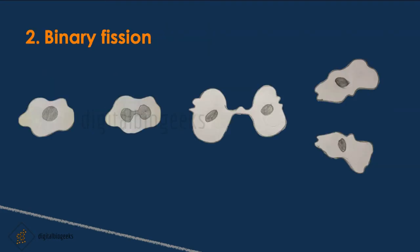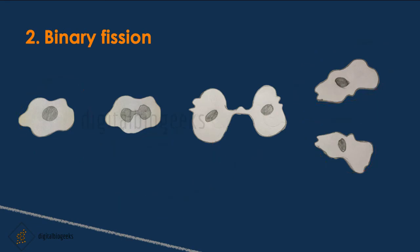Let's move on to binary fission. This type of asexual reproduction happens in Amoeba. First, the nucleus of the Amoeba divides into two, then the cytoplasm divides into two. Finally, two Amoebae are formed from a single parent. This type of reproduction is known as binary fission.